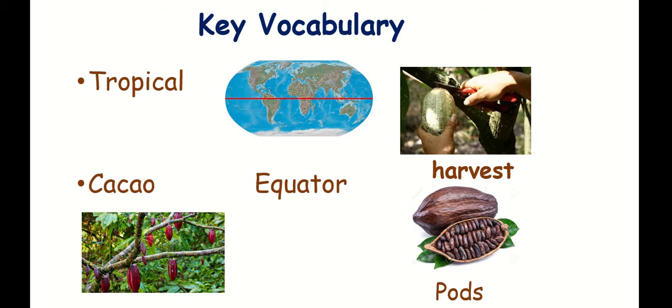Cacao is a type of plant or tree that grows cacao seeds. Pods are the round vessels or capsules that have seeds inside. Harvest is the process of gathering in and collecting crops.